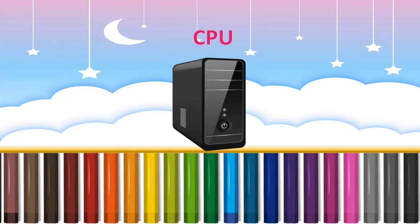CPU stands for Central Processing Unit. It is the main part of the computer. As the brain is the main part of our body which helps us to think and control our body, CPU is the brain of the computer. It controls the whole computer system and handles all the work given to it and gives the result.